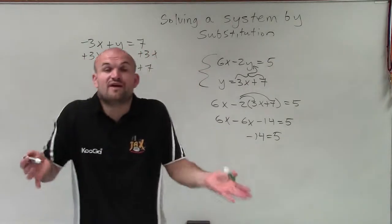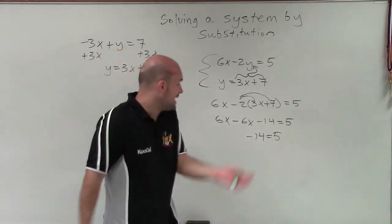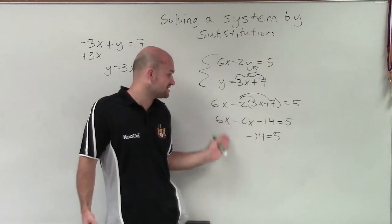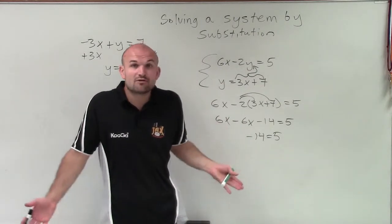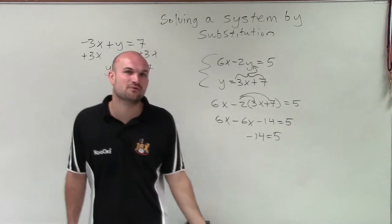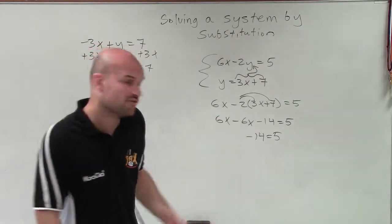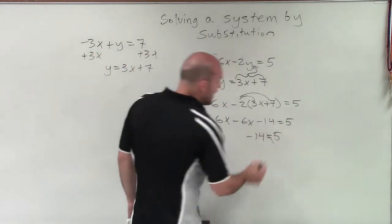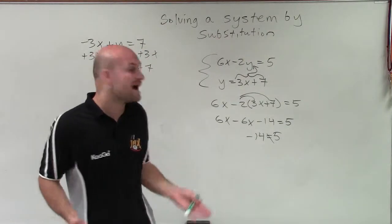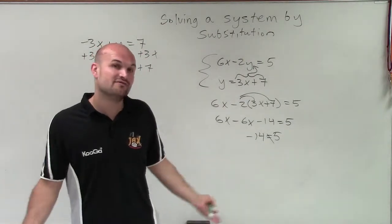Remember, we're trying to find the value of x that makes this equation true. I just eliminated my x because 6x minus 6x is 0x, and I'm left with the equation negative 14 equals 5. We know negative 14 does not equal 5, and it doesn't give me a value of x or y that I can figure out.